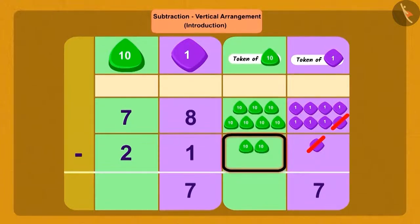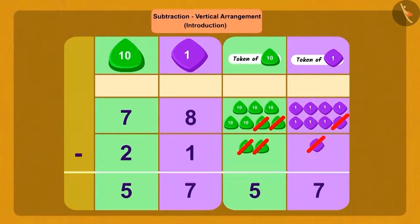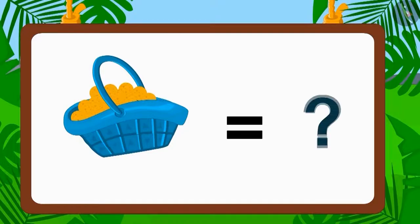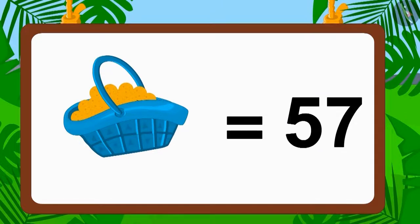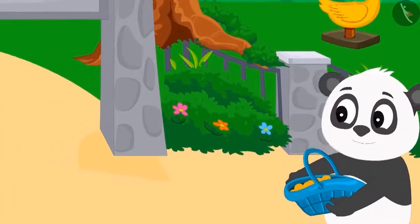Now if we remove 2 tens from 7 tens, then how many tens will be left? Absolutely correct, 5 tens. So now how many laddos are left in the basket? Yes, 57 laddos are left in the basket. After going a little further, Golu saw Babban's ice cream stall.